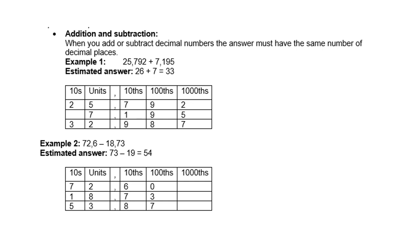Example 2, 72,6 minus 18,73. Estimated answer, round 72 up to 73, and round 18,7 up to 19. So estimated answer is about 54.